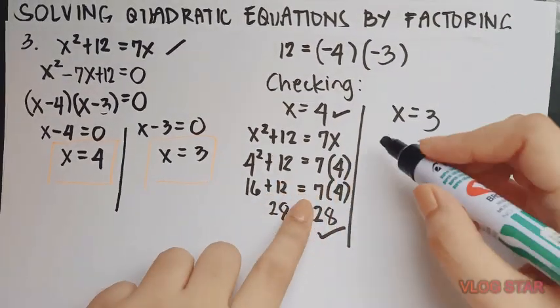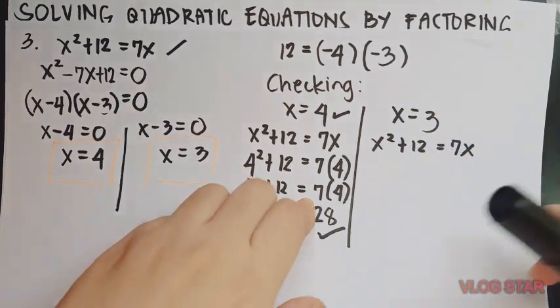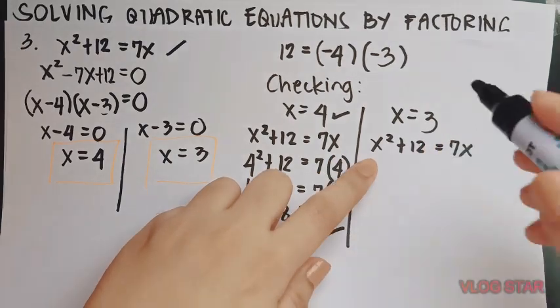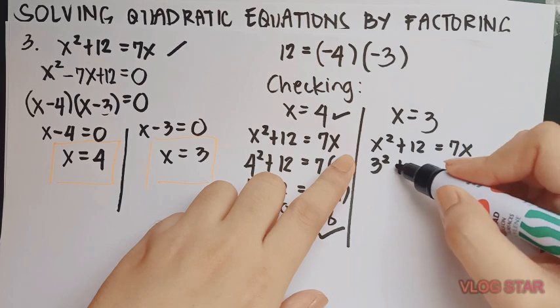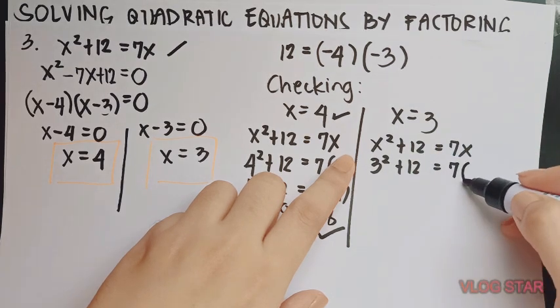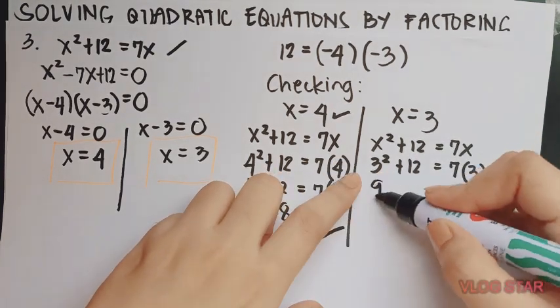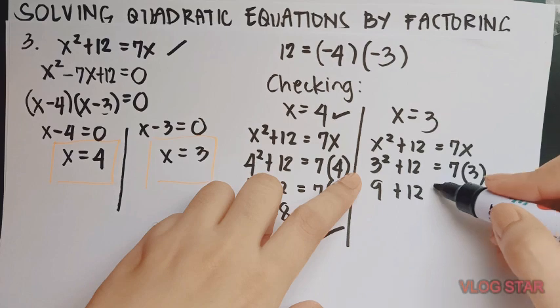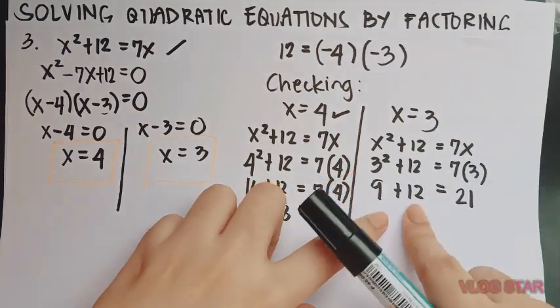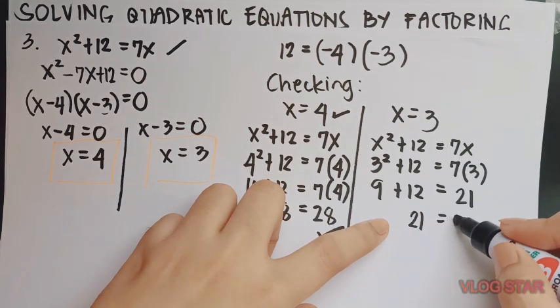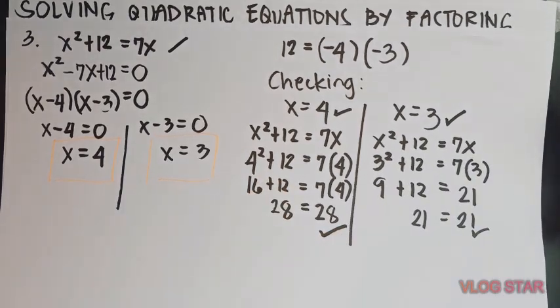What about x equals 3? Again, copy the equation. Substitute 3 to x. And we're going to have here now 3 squared plus 12. Is it equal to 7 times 3? 3 squared is 9 plus 12. Is it equal to 7 times 3? 21. 9 plus 12. So this is equal to 21. 21 equals 21 is correct. Therefore, x equals 3 is correct.